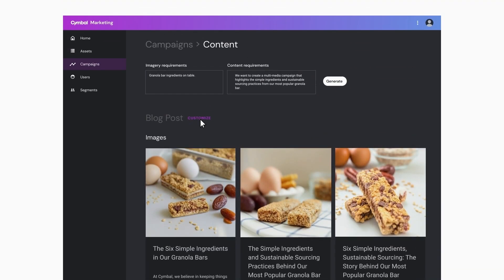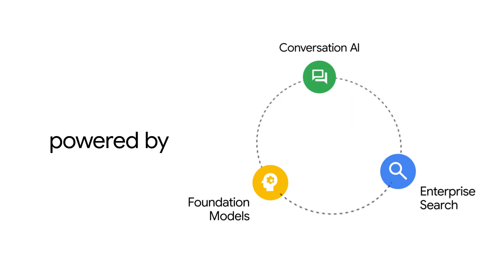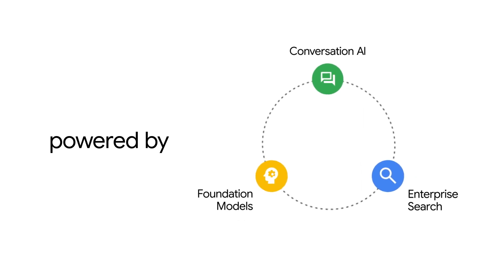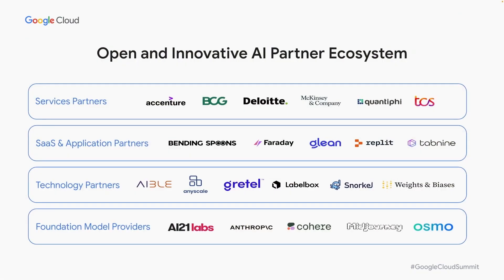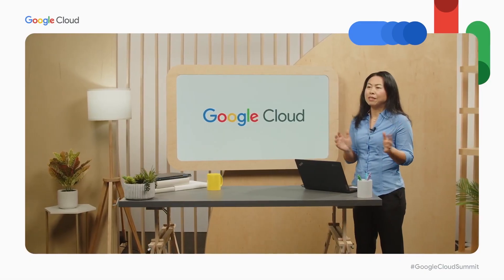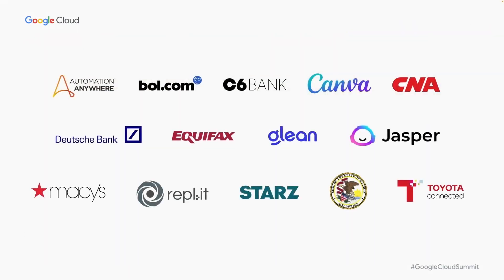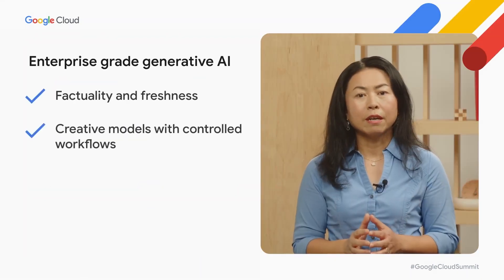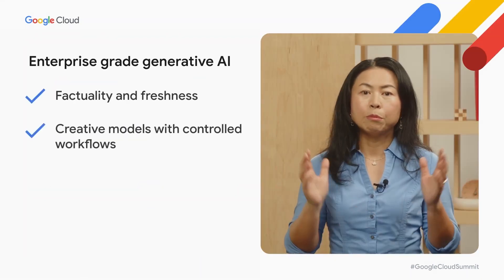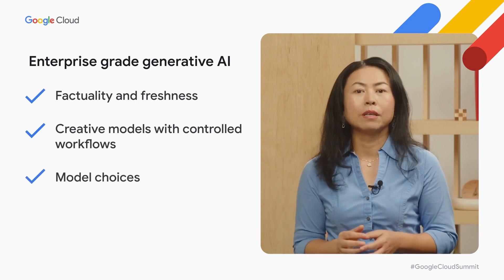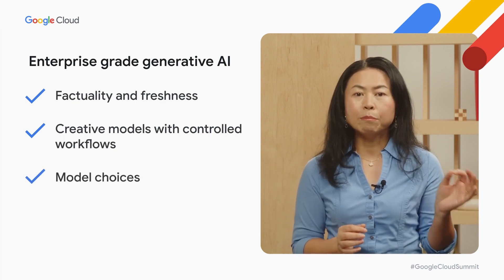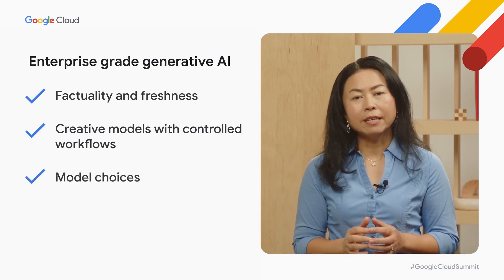This is all made possible by bringing together foundation models, conversation AI, and enterprise search. Our partners are ready to support generative AI at every layer of the stack. Since our launch two weeks ago, we have seen incredible demand from our customers. We ensure enterprise needs are met by providing choices and control, including data isolation and privacy. Private data is kept private. We can't wait to see what gen apps you're going to build with Google Cloud.